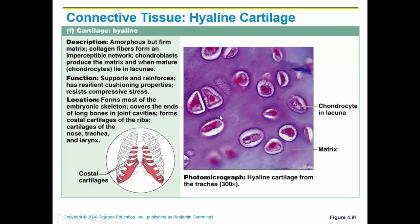Here is what hyaline cartilage looks like. The purple background is all the matrix — remember, the matrix is the non-living portion. Then you have the cell inside. This inner part of the circle is the cell, here is the nucleus, and it lies in this little space called a lacunae, which is just its home.